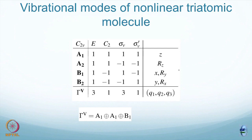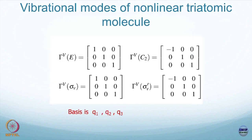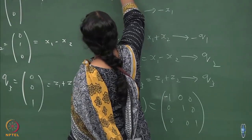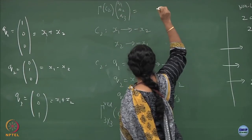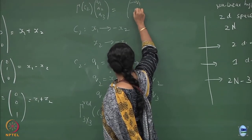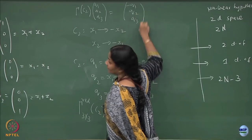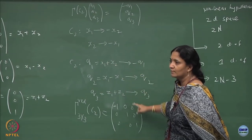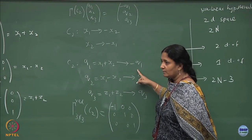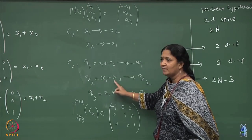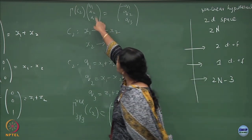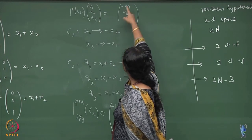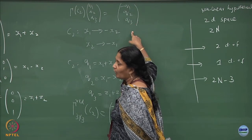The character table - which matrix? This matrix. I have to do the gamma of C2 when it acts on q1, q2, q3 should give me minus q1, q2, and q3. This is the meaning: q1 goes to minus q1; x1 goes to minus x2, x2 goes to minus x1. So x1 minus x2 remains same. I need a matrix which when it acts on q1, q2, q3 should give me this.